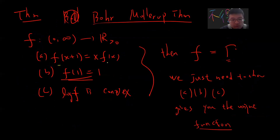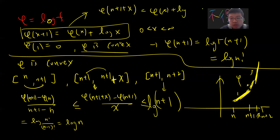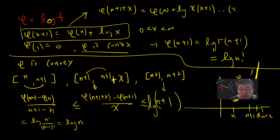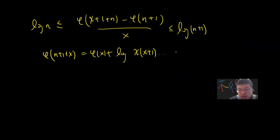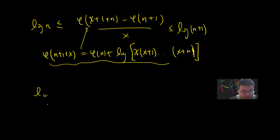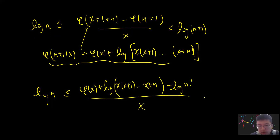By the recursion property, φ(n+1+x) = φ(x) + log(x) + log(x+1) + … + log(x+n). Substituting in and noting φ(n+1) = log(n!), we get: log(n) ≤ [φ(x) + log(x·(x+1)·…·(x+n) − log(n!)] / x ≤ log(n+1), for every n.